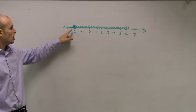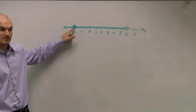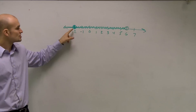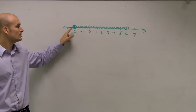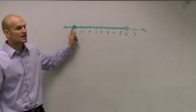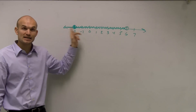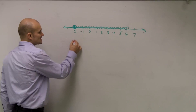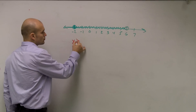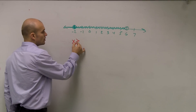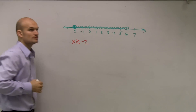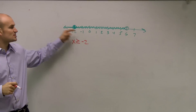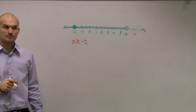We can say all numbers that are equal to negative 2 — negative 2 is true because it's shaded in. So we can say all numbers including all numbers that are greater than negative 2, and including negative 2, makes this true. So you could say x is greater than or equal to negative 2. That means all numbers that are greater than or equal to negative 2.